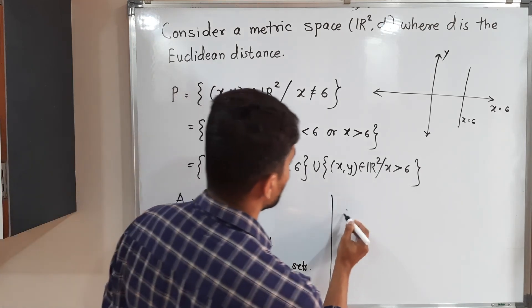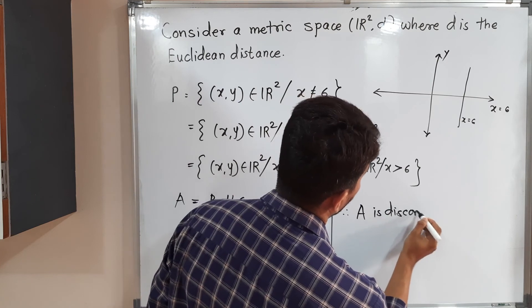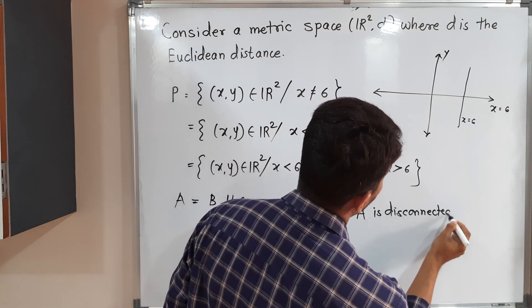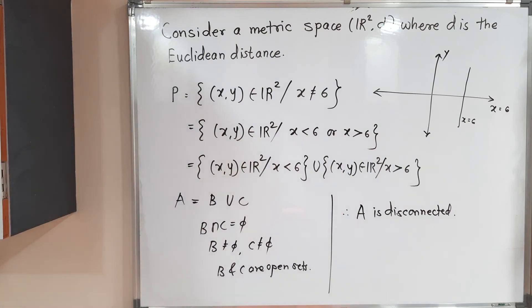What is our conclusion? Therefore, A is disconnected. This is the equivalent definition of disconnected set. In this way, we solve this example. Make a screenshot of it, then we will stop. Thank you. Bye-bye.